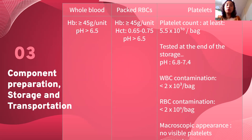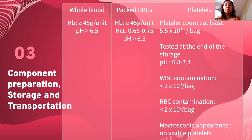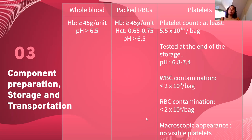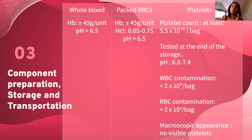The quality parameters we maintain: whole blood should have hemoglobin levels greater than or equal to 45 g/unit, with a pH around 6.5. For packed RBCs, the hematocrit level requirement is 0.65 to 0.75. For platelets, the platelet count should be around 5.5 × 10¹⁰ per bag, pH 6.8 to 7.4, WBC less than 2 × 10³, RBC contamination less than 2 × 10⁹, and no visible aggregation.